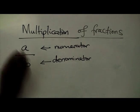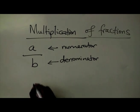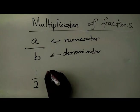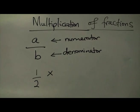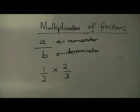So any number that can be written in this form is a fraction. So if we have a number 1 over 2 and we want to multiply it by another fraction, which is maybe 2 over 3, how do we do it?